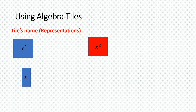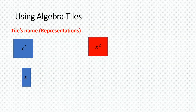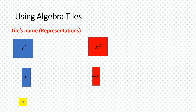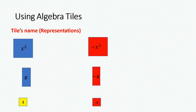The rectangular blue tile is x, whereas the flip side of this tile is red and it's minus x. The small yellow tile is the unit tile, and on the flip side of this tile is the red tile, that is minus 1.